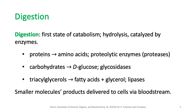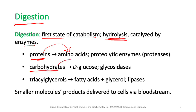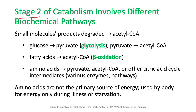Step one is digestion — the first stage of catabolism — where biomolecules are hydrolyzed by enzymes. Protein is hydrolyzed into amino acids, carbohydrates into glucose, and triglycerol into fatty acids and glycerol, which are the building blocks of these biomolecules. Once we get these smaller products, they are delivered to cells by the bloodstream and the cells absorb these amino acids, glucose, and fatty acids.